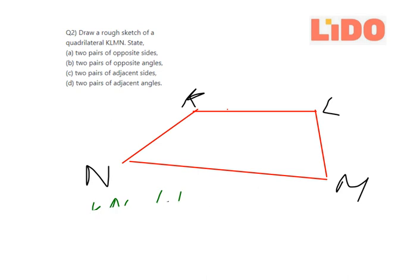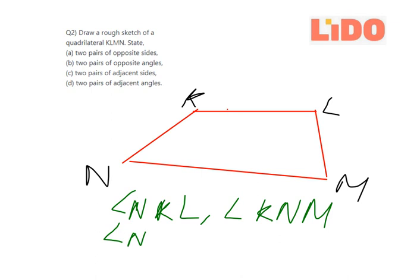Okay, let's move on further to the last one. The last one is two pair of adjacent angles. So the two pairs, first pair is angle NKL, so angle NKL and angle KNM. The second pair is angle NML and the angle MLK.